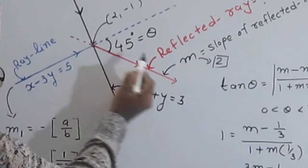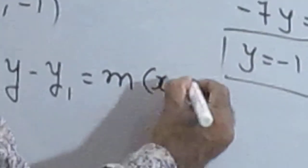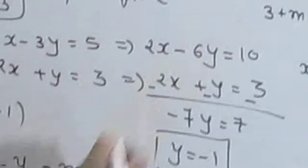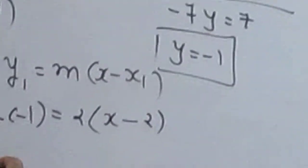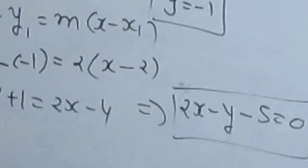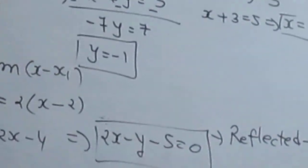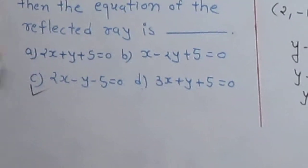The point is given and the slope is given. We have the slope and point. Using the point-slope equation: y minus y1 equals m times x minus x1. Here x1 equals 2, y1 equals minus 1, and m equals 2. So y minus minus 1 equals 2 times x minus 2. That gives y plus 1 equals 2x minus 4, which implies 2x minus y minus 5 equals 0. So the equation of the reflected ray is 2x minus y minus 5 equals 0. Option C is correct.